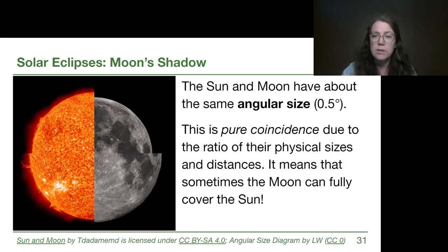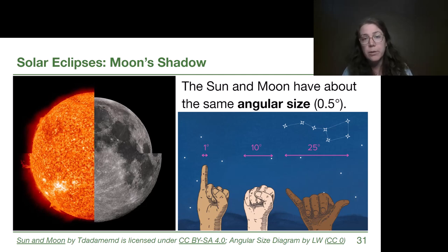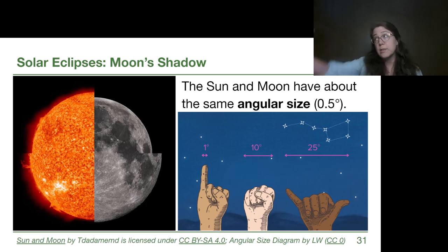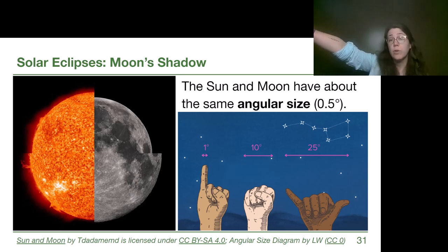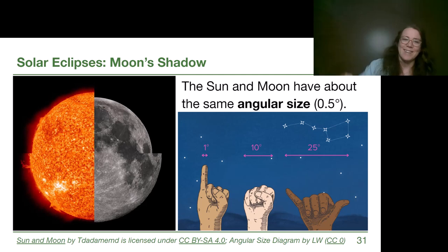Angular size is something we can use in everyday nighttime observing. If you hold your pinky finger up at the full extent of your arm, your pinky takes up about one degree of angular size. People with longer arms tend to have larger pinkies, so it always ends up being about one degree for all humans. Hold up your fist at full outstretched and the width becomes 10 degrees in your view. Extend your thumb and pinky as far apart as you can and fully extended, that's about a 25-degree angular size — roughly how far across the Big Dipper asterism is.